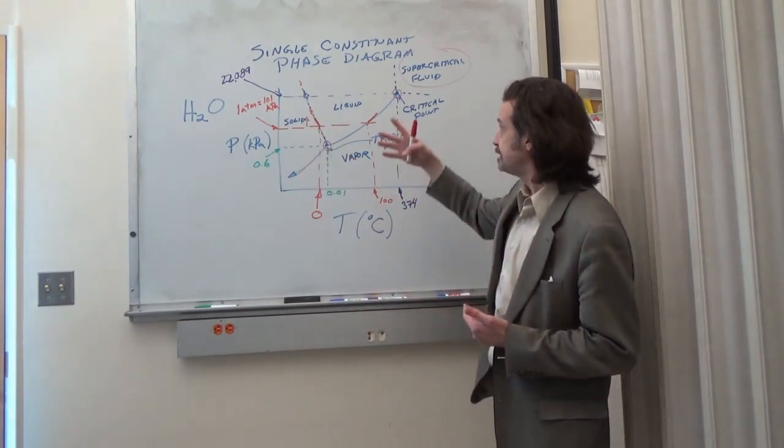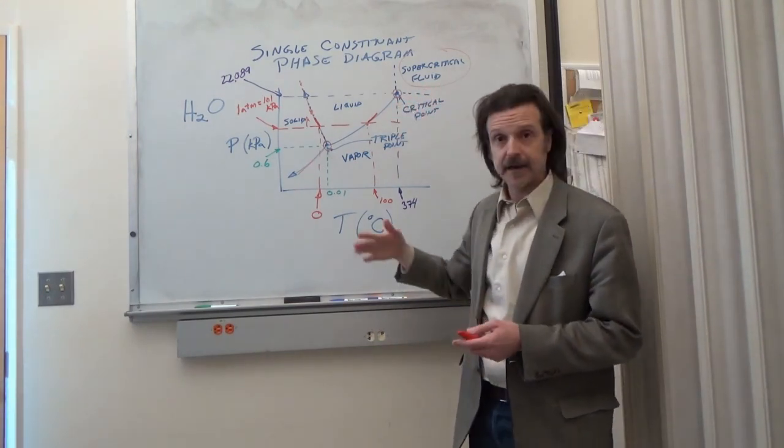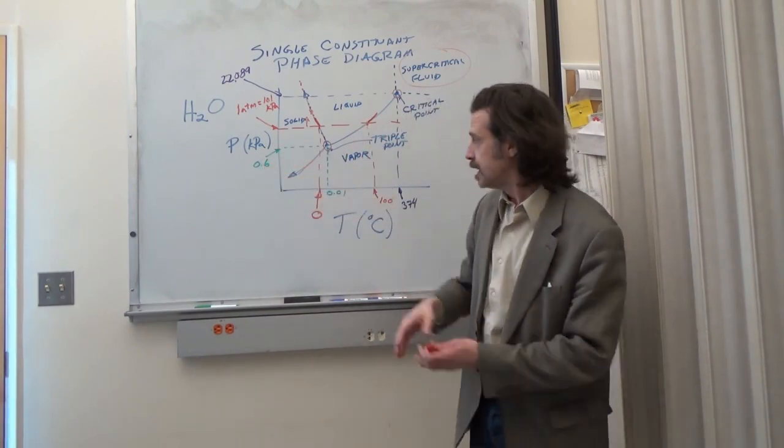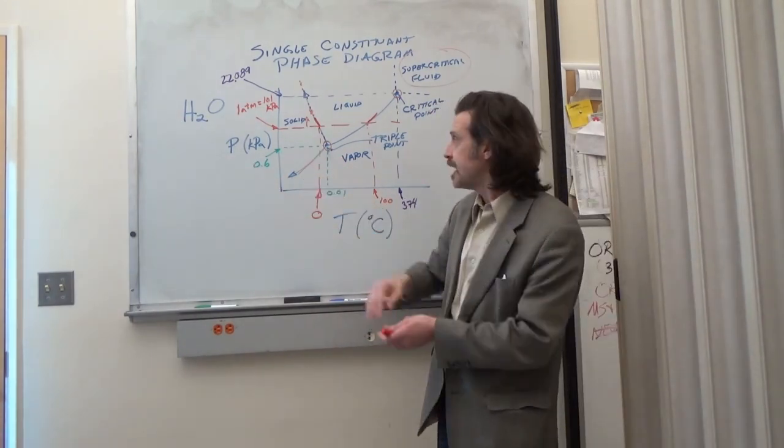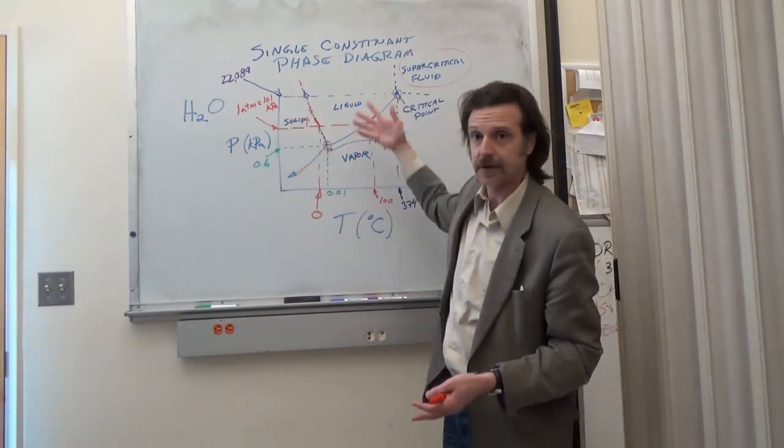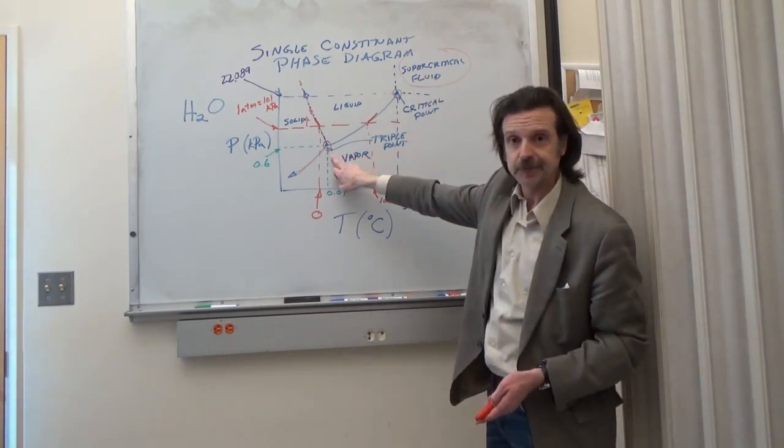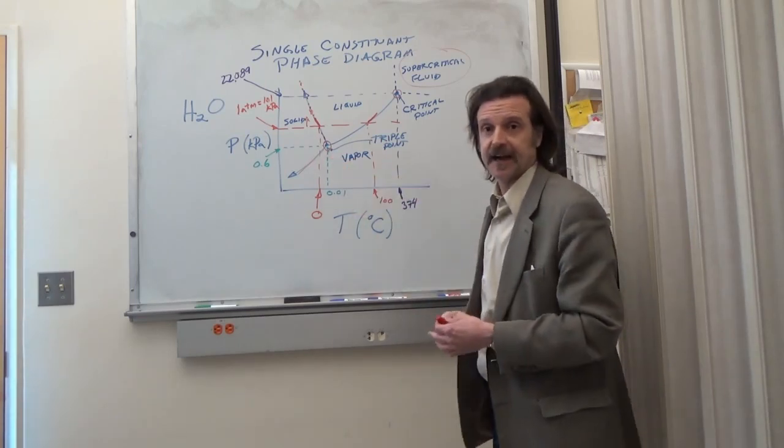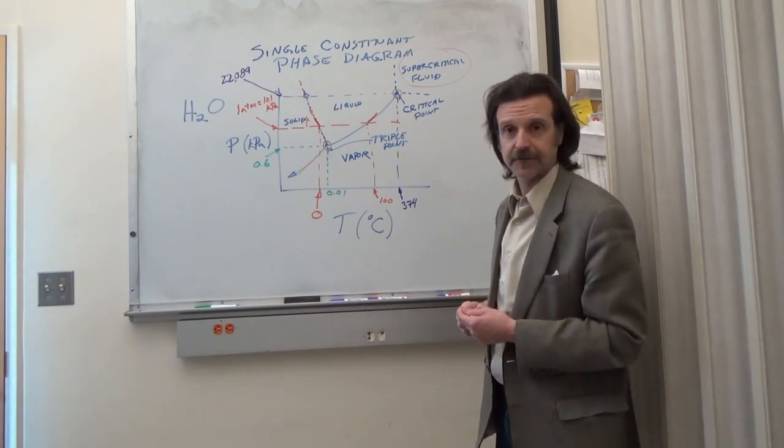So this is a single constituent phase diagram. And if you had other properties, for example you had pressure, temperature, and electric field, well then you could have an electric field sticking out of the board and you would have an axis for each. And you would have a volume of space that is defined as solid, vapor, liquid. And you would also have critical points and triple points where you specify the states of the special points within our phase diagram.